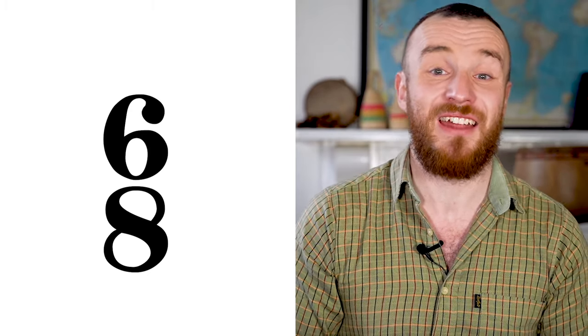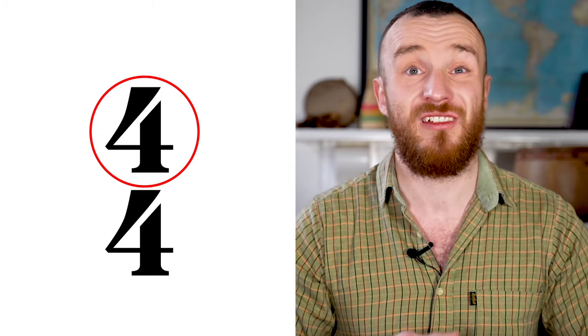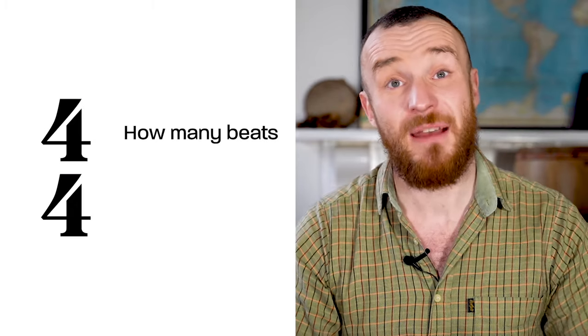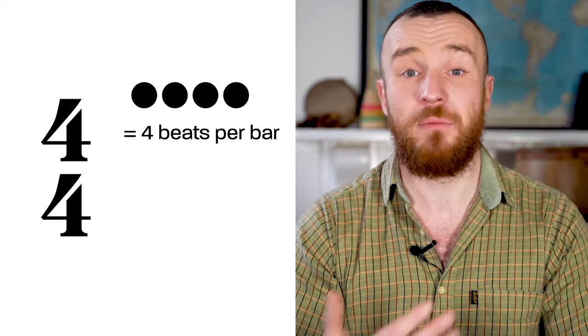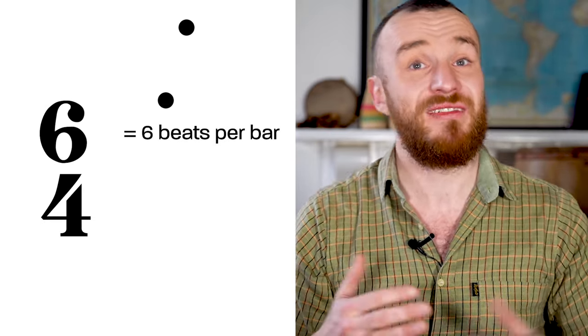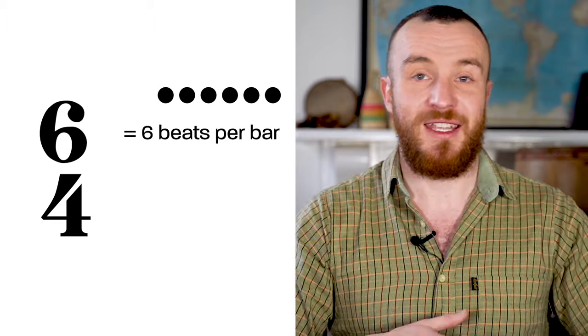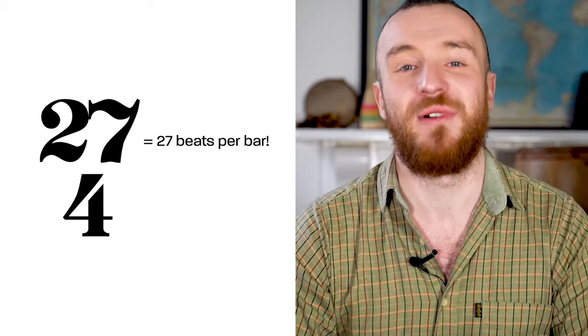Time signatures are represented as two numbers stacked on top of each other. The top number shows us how many beats. For example, if the top number is four, then we have four beats in a bar. If it's six, we have six beats in a bar. If it's 27, we have 27 beats in a bar. Super uncommon though.